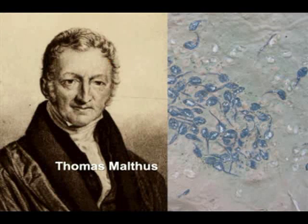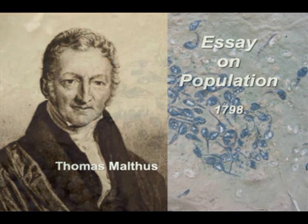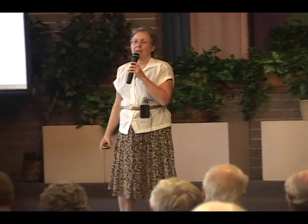In 1798, Thomas Malthus used mathematics in order to work up an understanding of ecologically, cosmologically, ethically, what does this mean? Why is there death in the world? He calculated the geometric rate of population growth — what would happen if you have birth and birth and birth and birth, but never death?